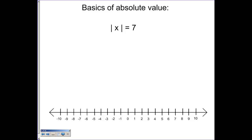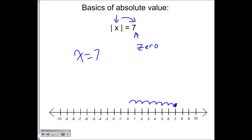Another example: what if we replace that with a variable instead of a number, and we ask what the absolute value of x equals seven? What we need to know is what value can I put inside the absolute value so that it outputs a positive seven — in other words, what number is seven units away from zero? Starting at zero and going seven units in the positive direction gives x = 7. Going seven units in the negative direction gives x = -7.